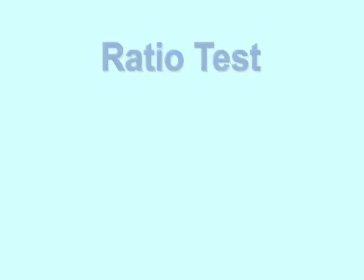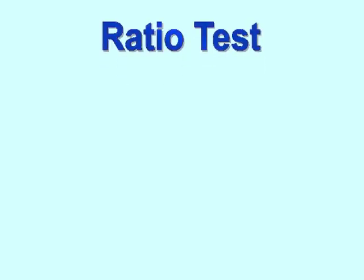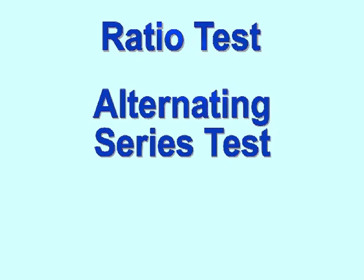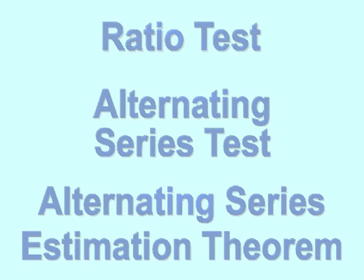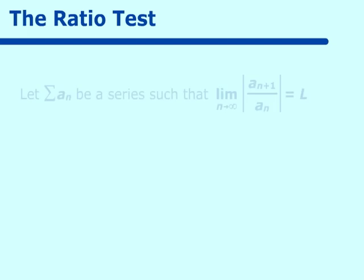This lesson is on the ratio test and the alternating series test, and then we will go to an alternating series estimation theorem. The ratio test is the last test that you will have on positive series. The alternating series will alternate signs — the terms will be both positive and negative. So let's look at the definition of the ratio test.